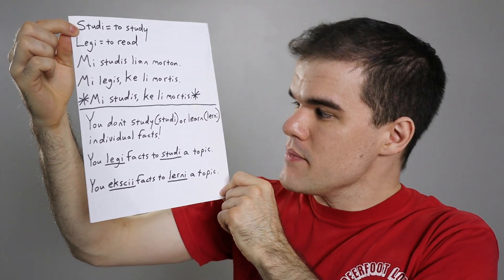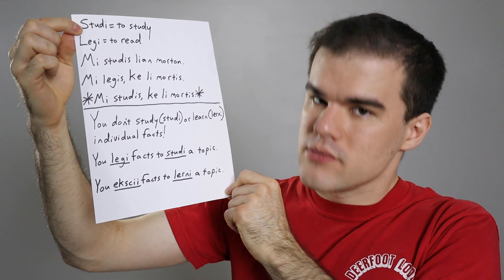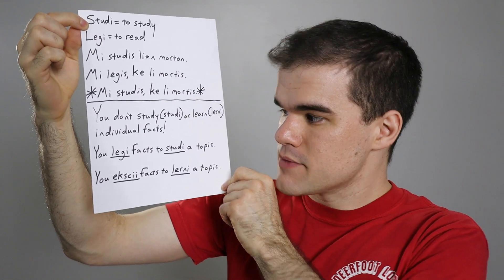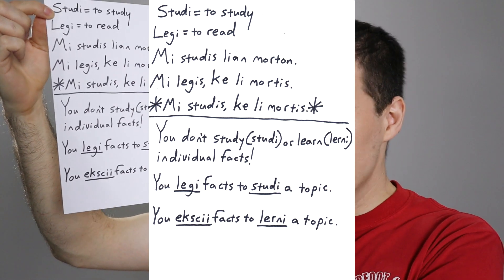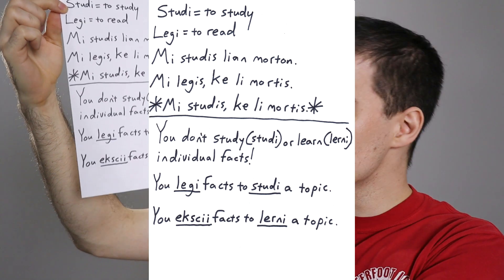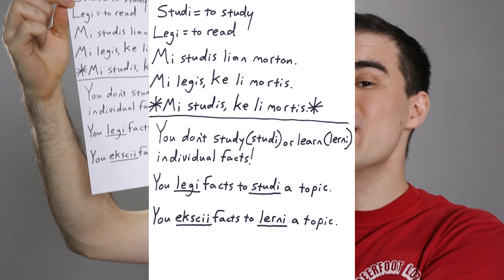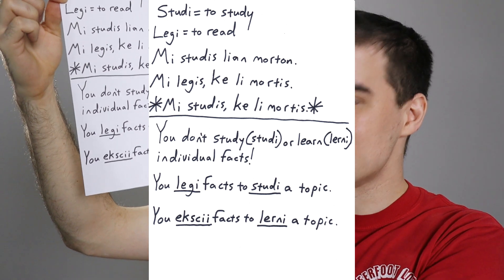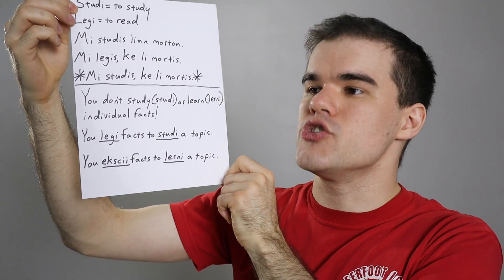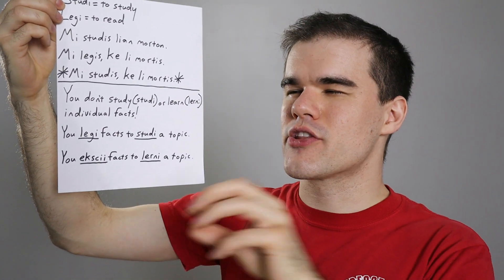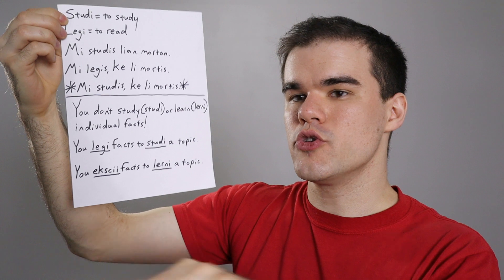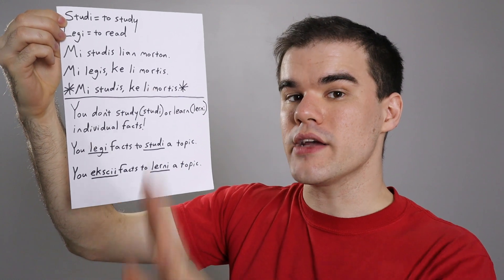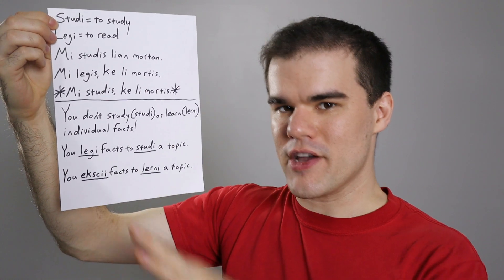You don't studi — study — or lerni — learn — individual facts. You legi facts in order to studi a topic. Similarly, you ekscii facts in order to lerni a topic. You read lots of little facts, and through the reading of those facts, you study something big. Similarly, you ekscii a lot of little facts, and through doing that, you find yourself lerni-ing something bigger.